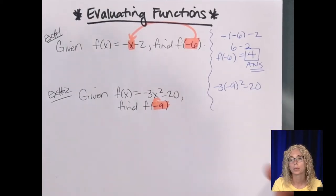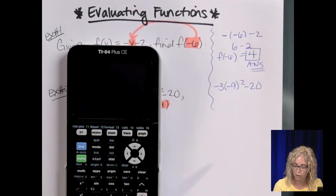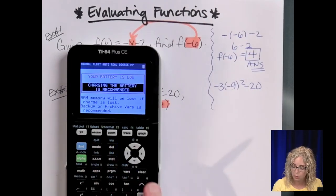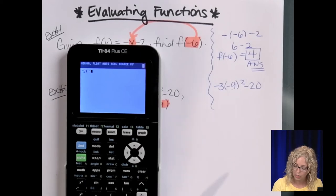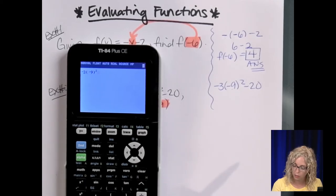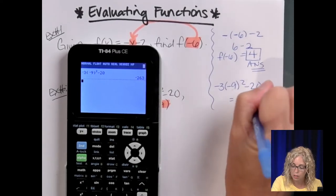So it becomes negative three times negative nine squared minus 20. So order of operations, right, we have to do exponent first, but you can also, your calculator follows the order of operations. You can type this in, so negative three, parenthesis negative nine squared, and the calculator will do the math for you. So you plug it in, and we get negative 263.